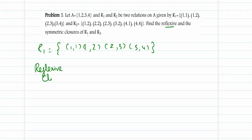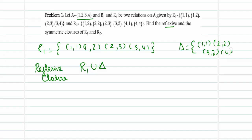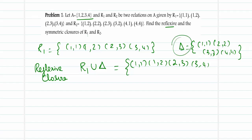Reflexive closure is obtained by R1 ∪ delta. The delta elements for set A = {1,2,3,4} are (1,1), (2,2), (3,3), (4,4). Taking the union with R1 — (1,1) is already present so we ignore it; we introduce (2,2), (3,3), and (4,4). This new relation contains all the reflexive elements and is therefore called the reflexive closure.